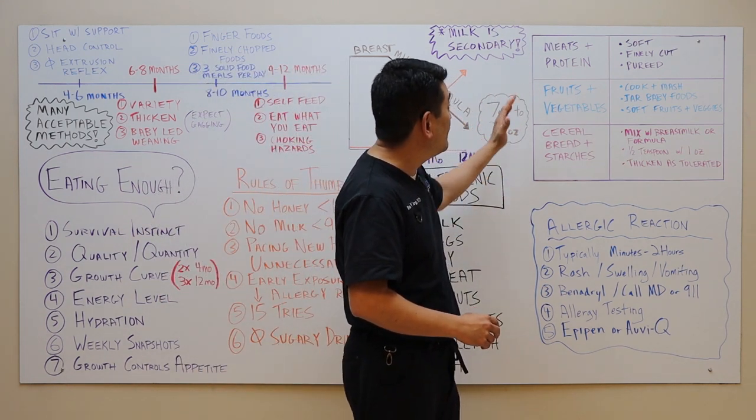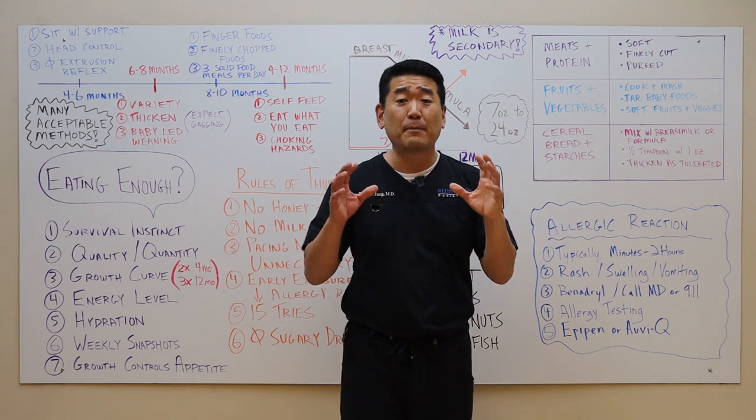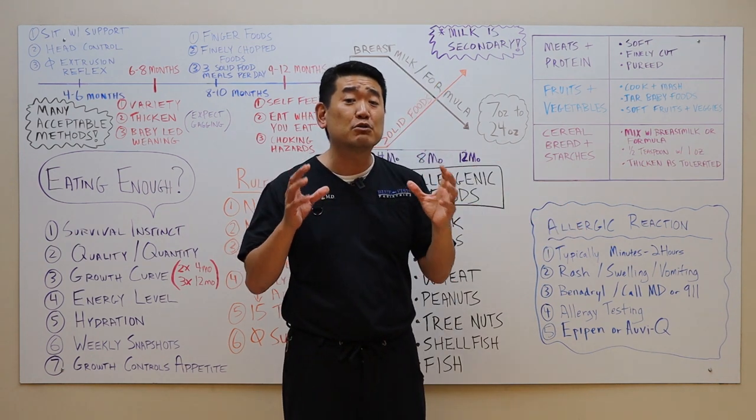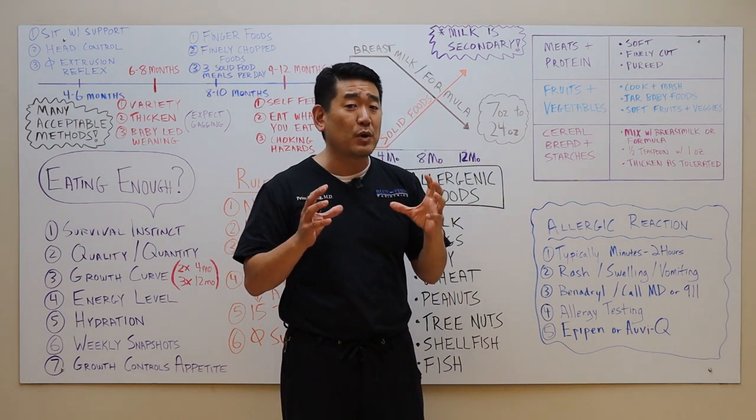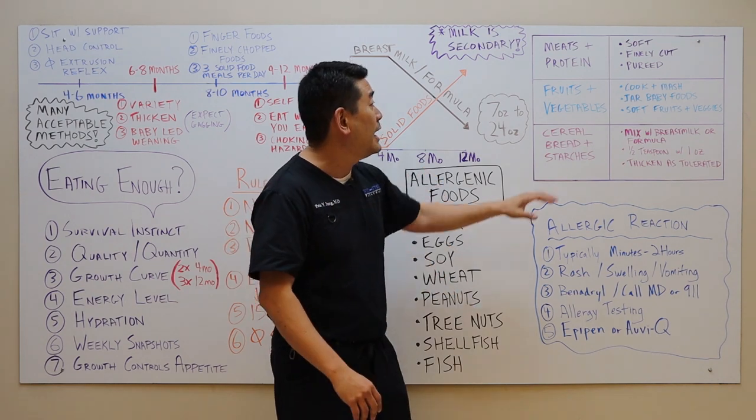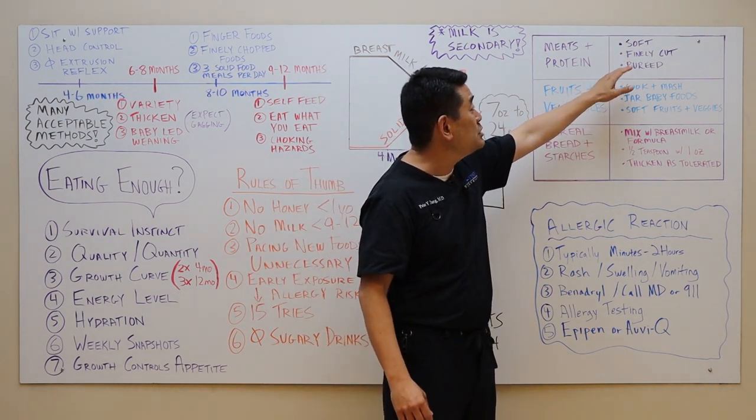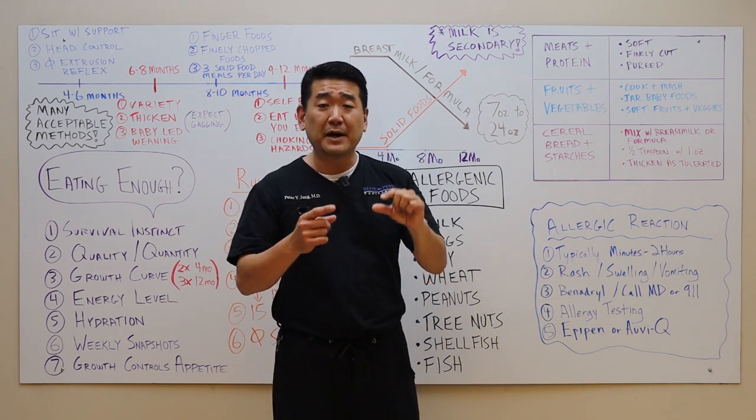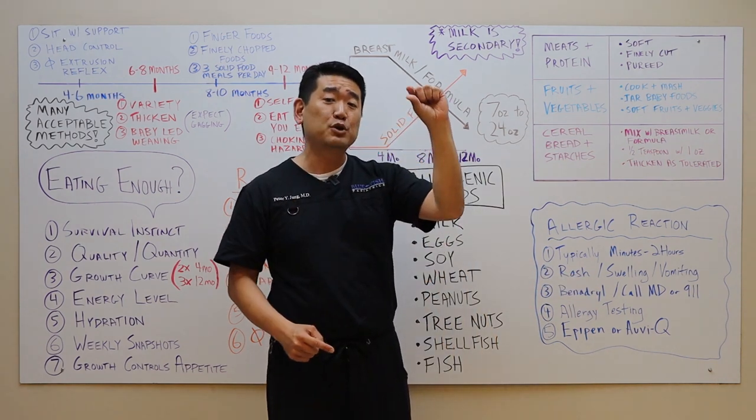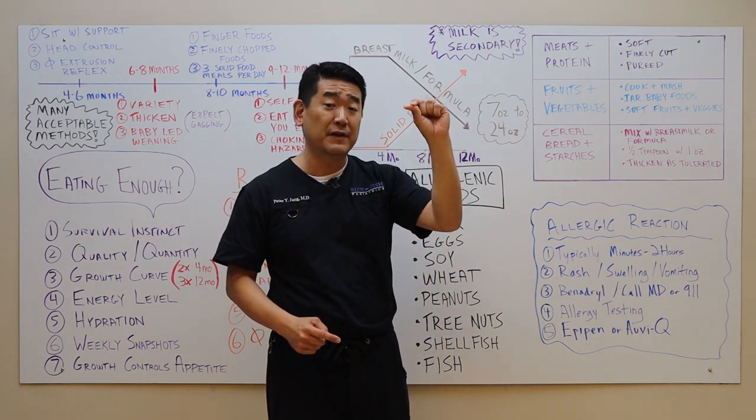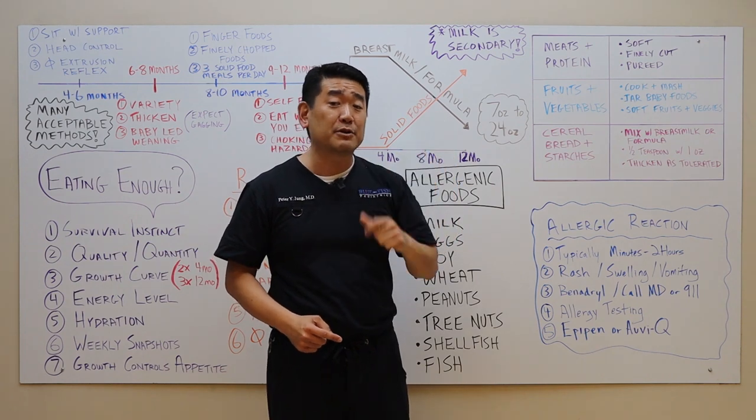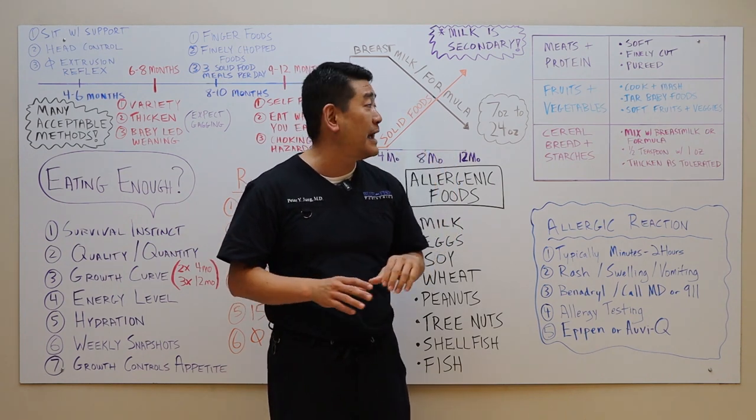Now the different types of food groups that you can give, meats and proteins I think are the most nutritious. They carry the most minerals and vitamins. So that is generally where experts now recommend you start. You can give them soft foods which are finely cut and pureed. As a rule of thumb, if you can put the food in between your fingers and you can crush it with your fingers, then your baby should be able to handle it with their gums, even if they have no teeth.